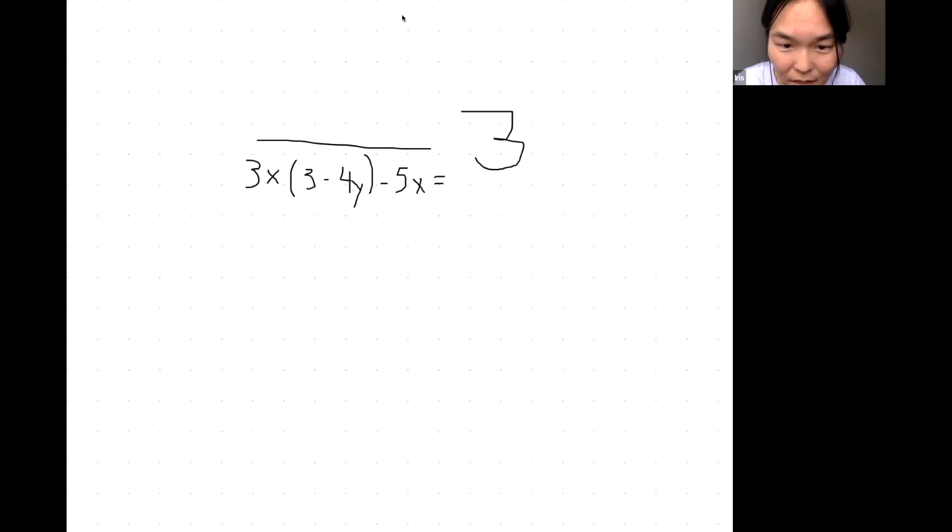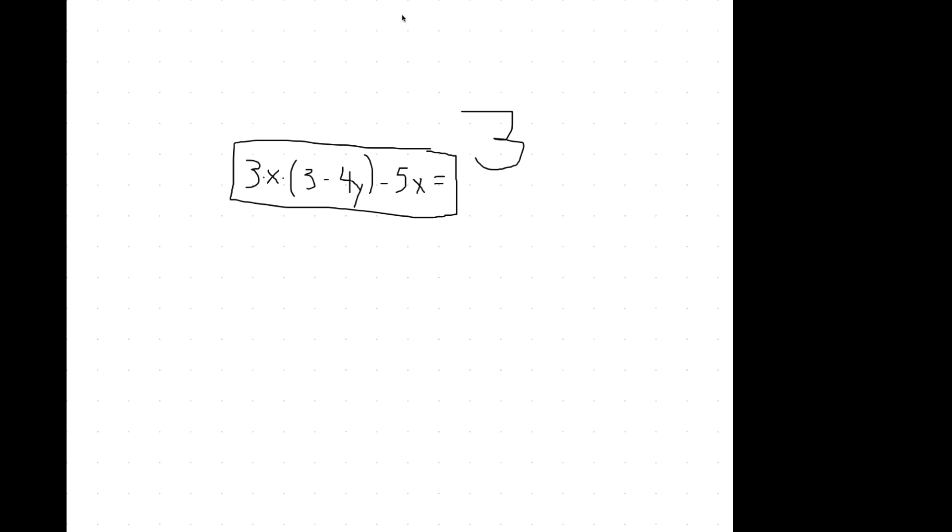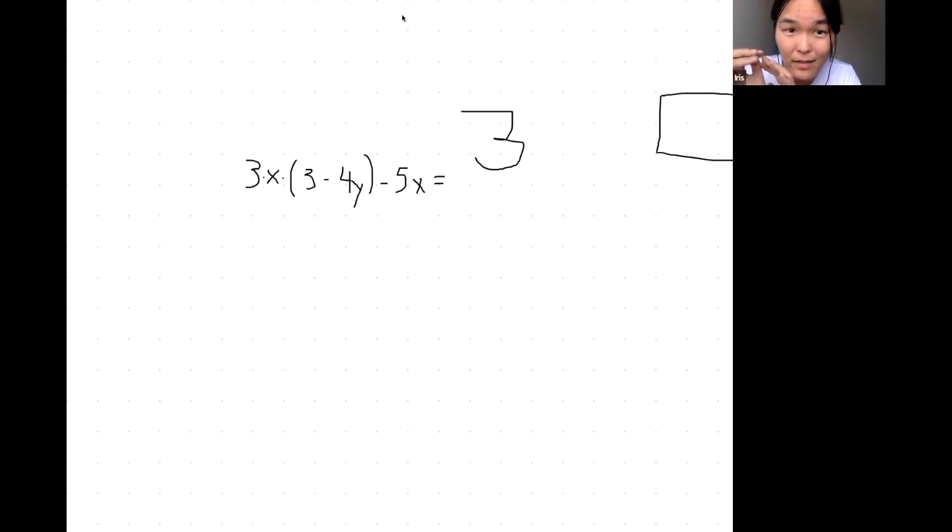That's the one I had on the slide. I am not writing anything, but when we write them together, these are already multiplications implied. It's 3 times x times (3 minus 4) times y minus 5 times x. These are already that. So the first thing is, before we combine the like terms, we do the distributive property. We need to multiply this out to remove the parenthesis.